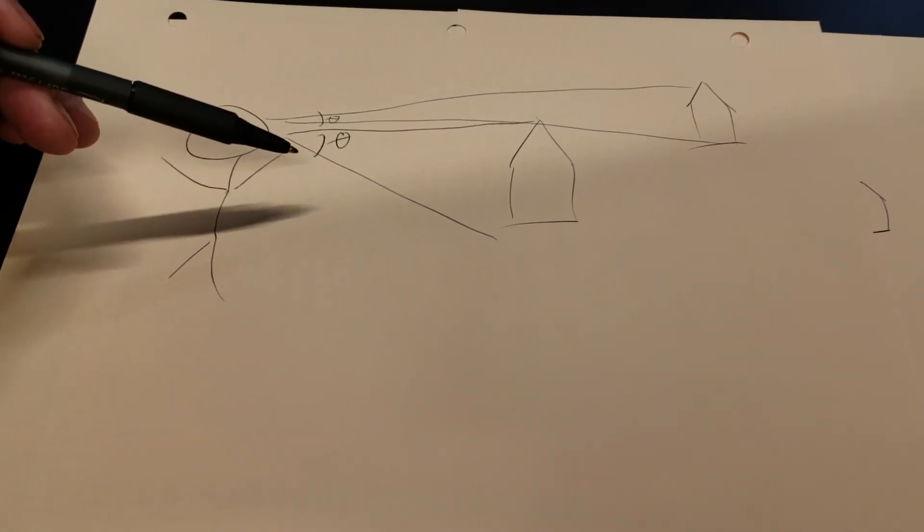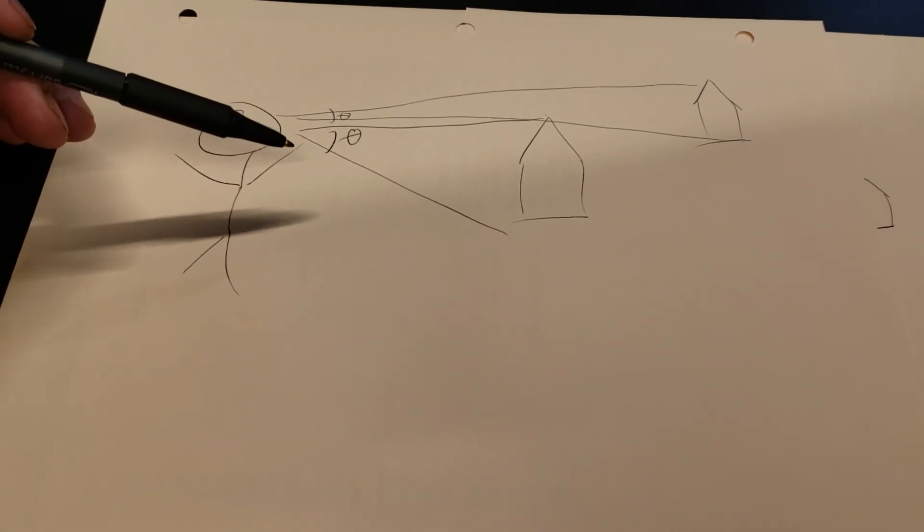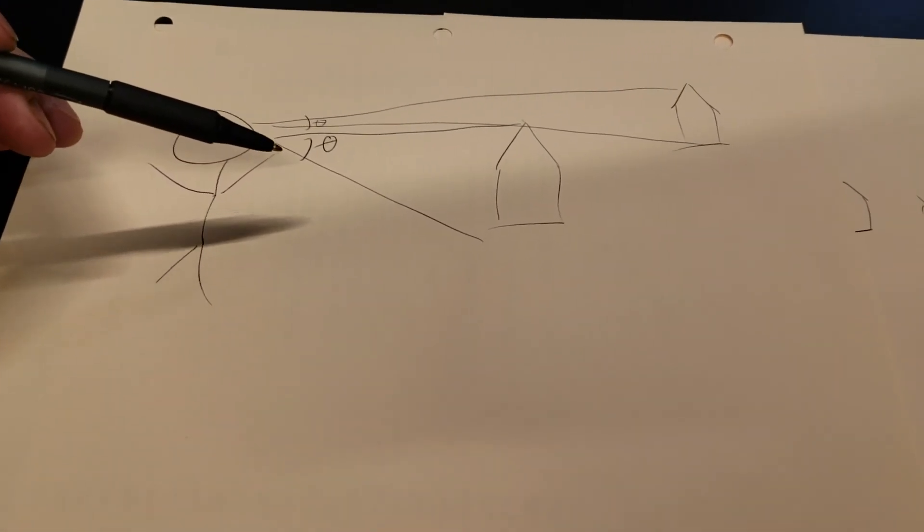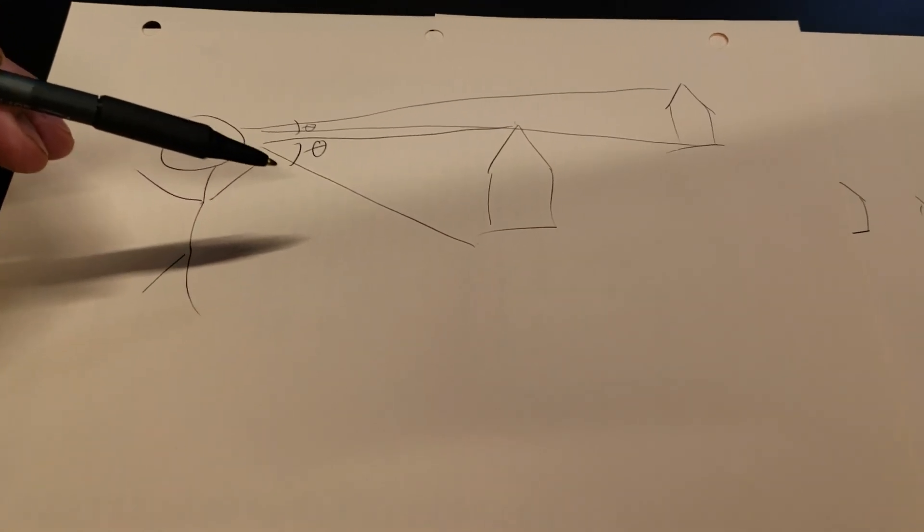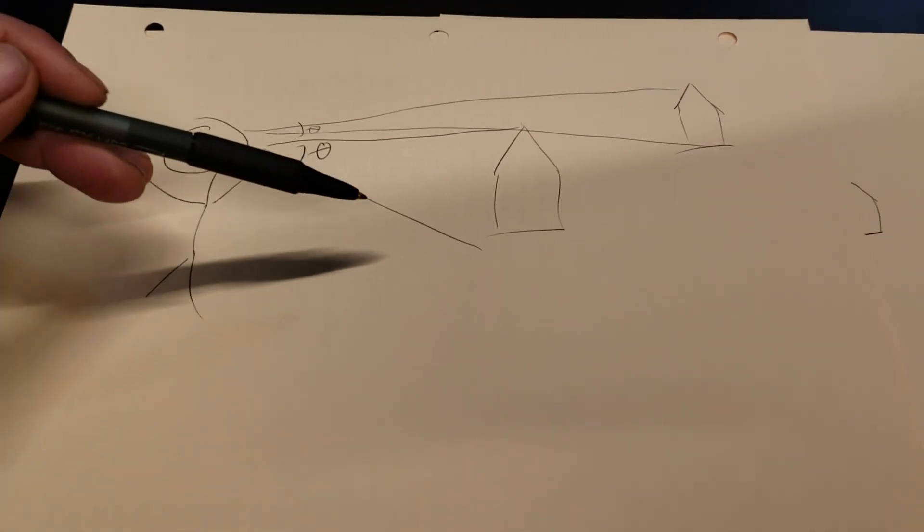Is it bent? Does it get bent by refraction, the reflection? I don't care. Show me how it bends. Show me what happens to that line to get blocked off. Because this is your line of sight to the bottom of the object. How does that line get blocked off?